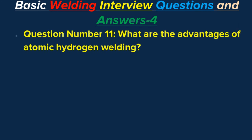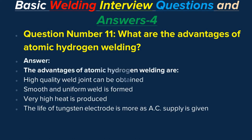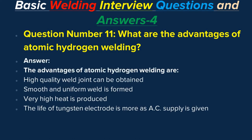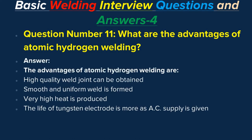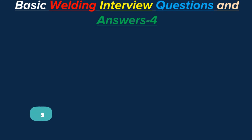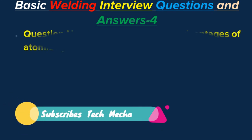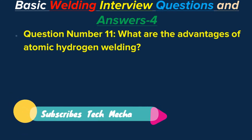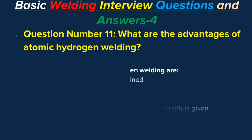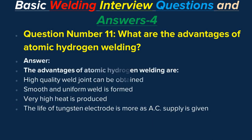Question number eleven: What are the advantages of atomic hydrogen welding? Answer: The advantages of atomic hydrogen welding are high quality weld joints can be obtained, smooth and uniform welds are formed, and very high heat is produced.